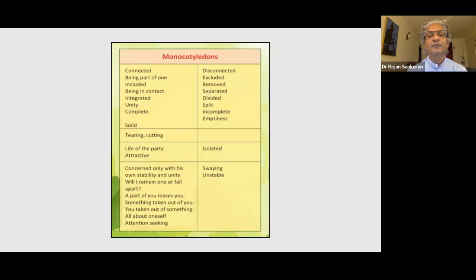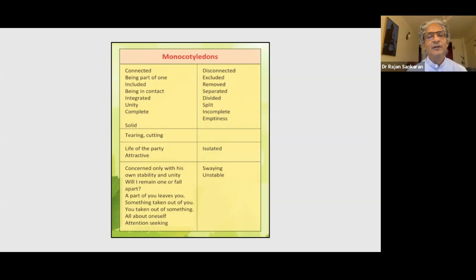The main words of monocotyledons are: connected, being part of one, included, integrated, united, completed. And the opposite: disconnected, excluded, separated, divided, incomplete, empty. You can also see a lot of attention-seeking — look at me, I'm the life of the party, I need to be attractive — because on the other side you feel excluded or isolated.